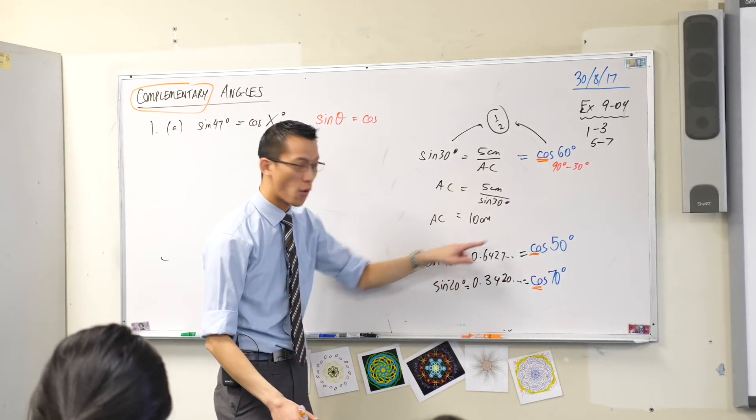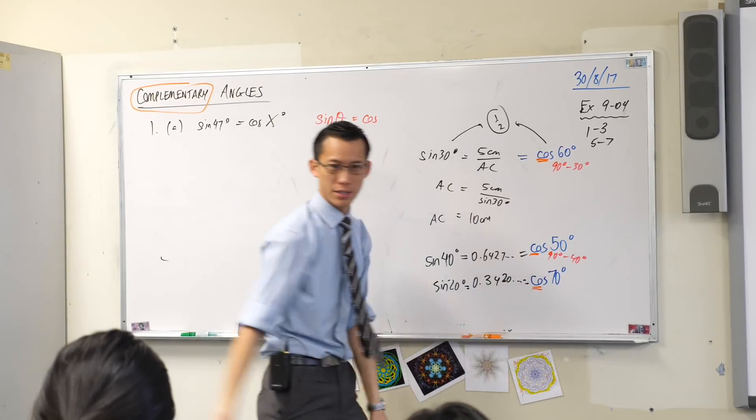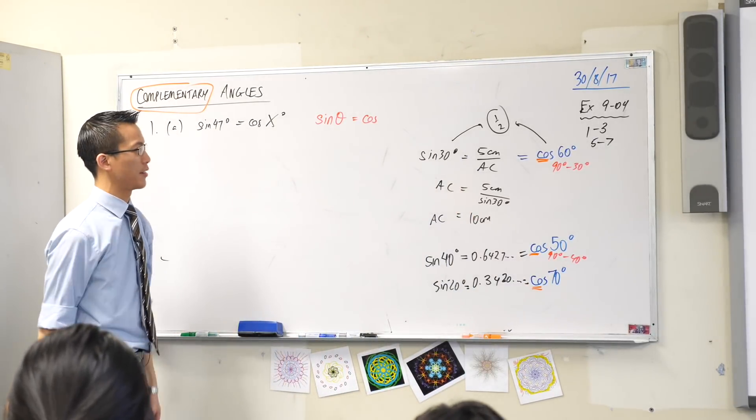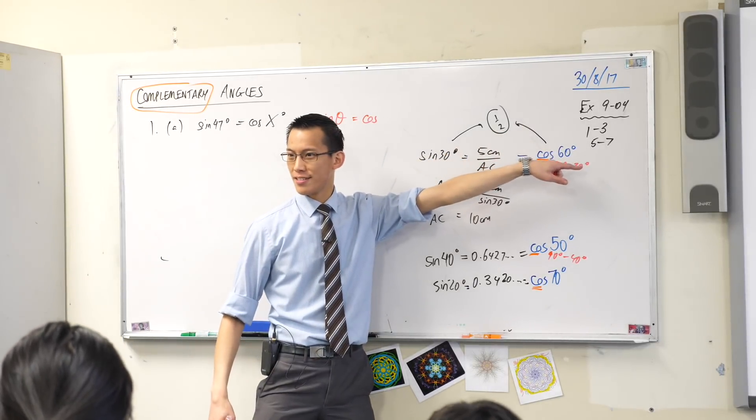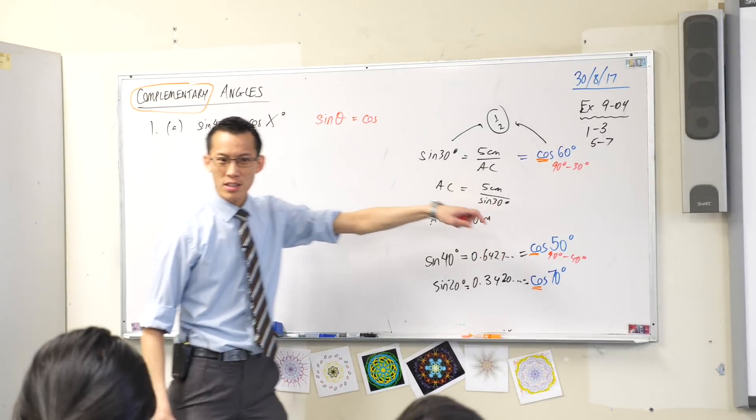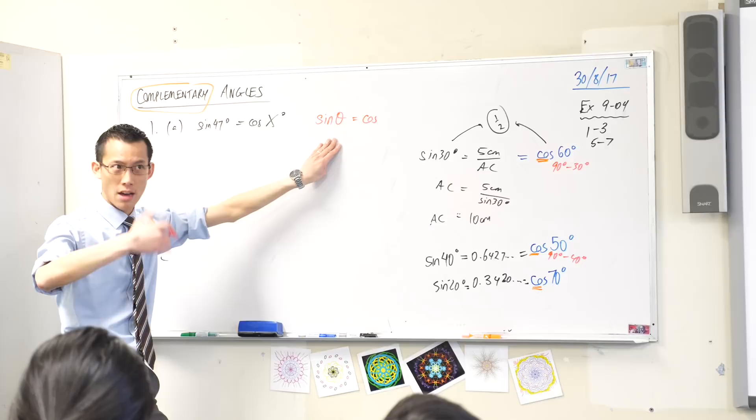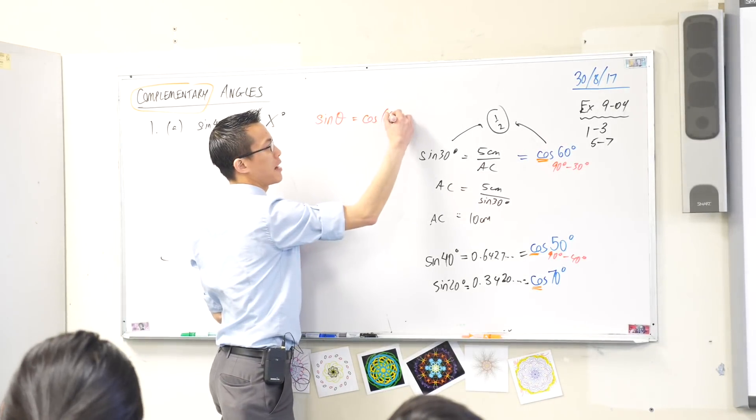Down here to go from 40 to 50, this is just 90 degrees minus 40 degrees. So generally speaking, the complement of 30 is 90 minus 30, the complement of 40 is 90 minus 40, so the complement of theta will be 90 minus theta, whatever it happens to be.